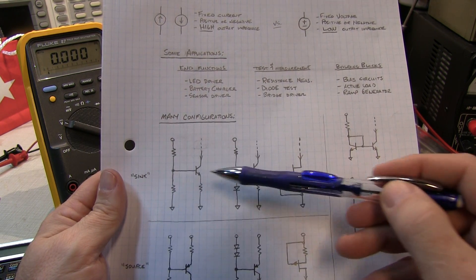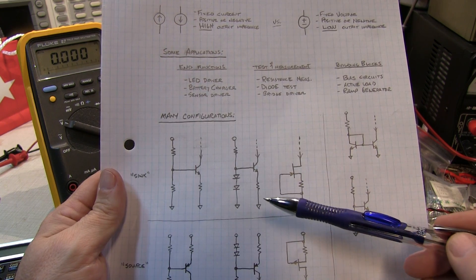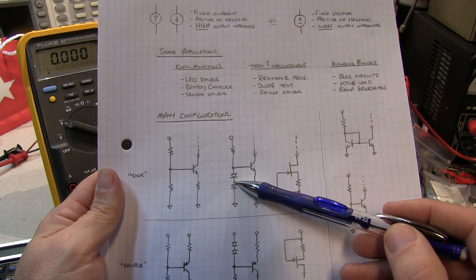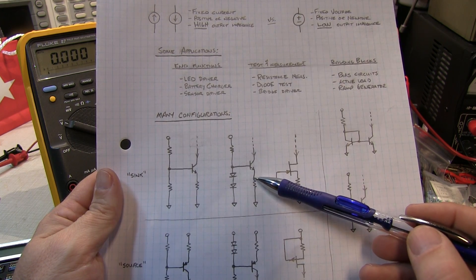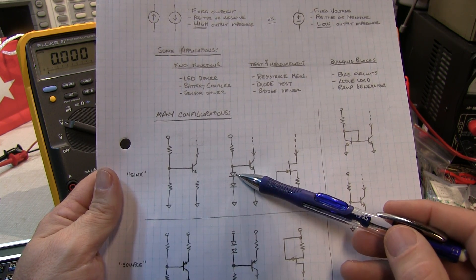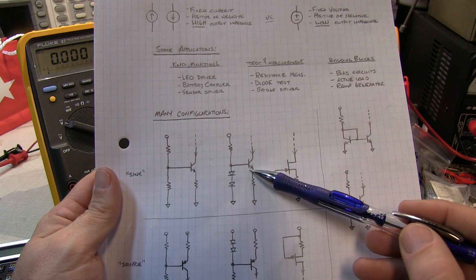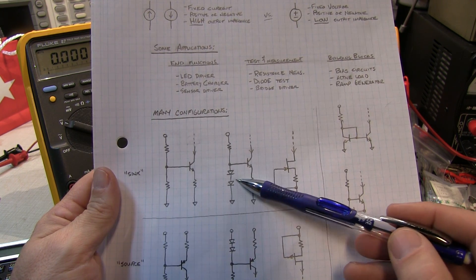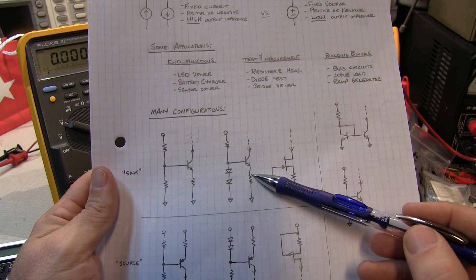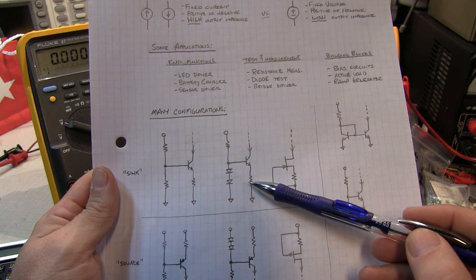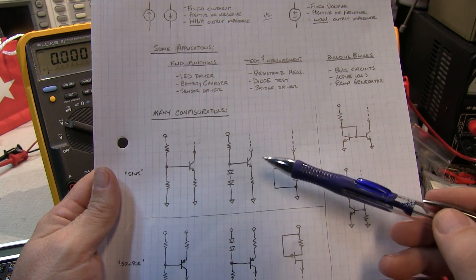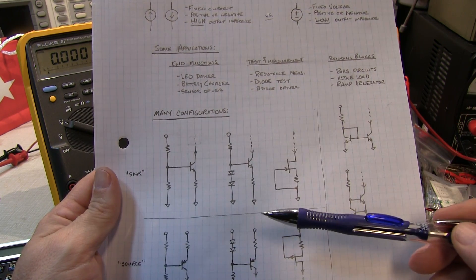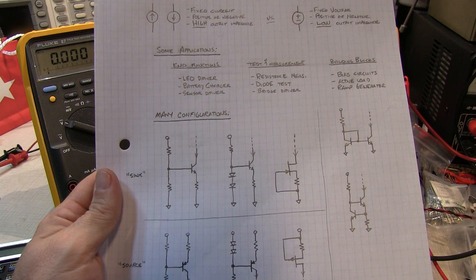If you replace this resistor with a pair of diodes, the voltage at that point will basically be the same voltage at the other point, since the voltage drop across the diode is going to be about the same as the base-emitter drop. That means you'll have essentially one diode voltage drop across the resistor, and that won't change much even if the power supply changes. So this configuration is a little more immune to power supply variation.